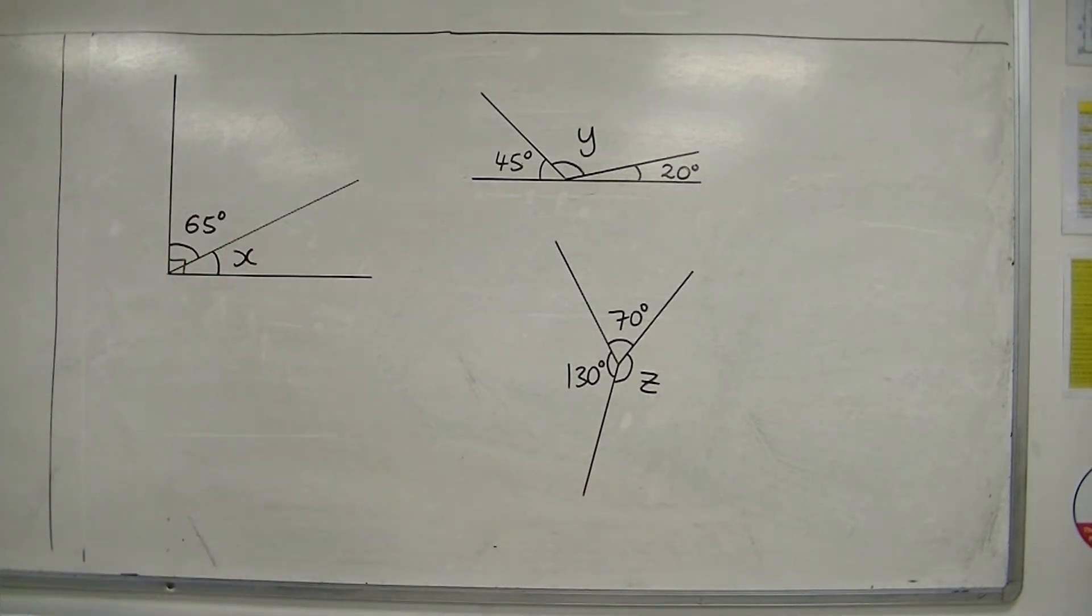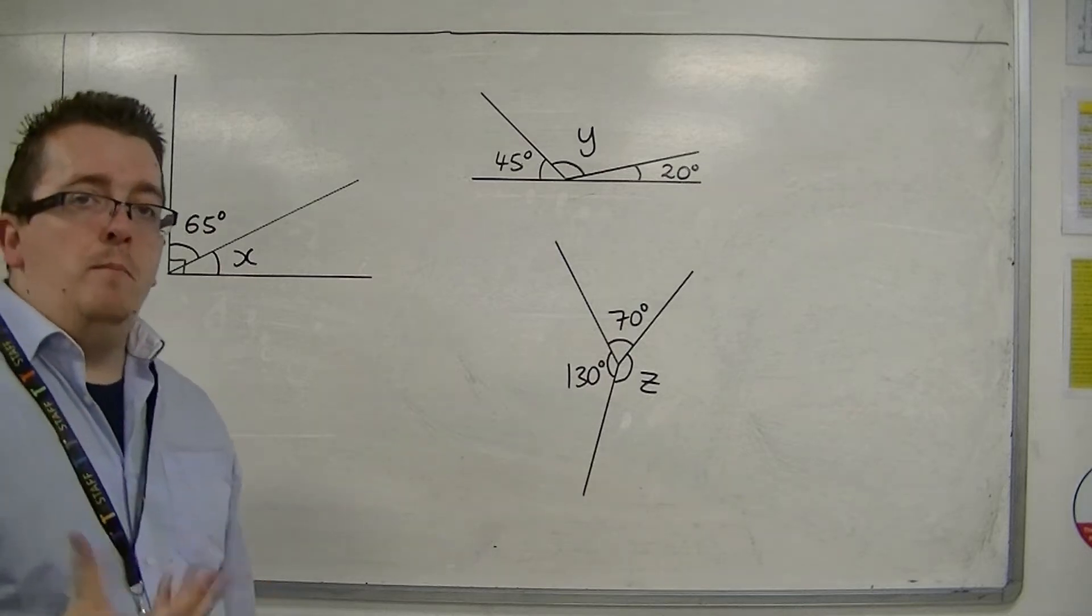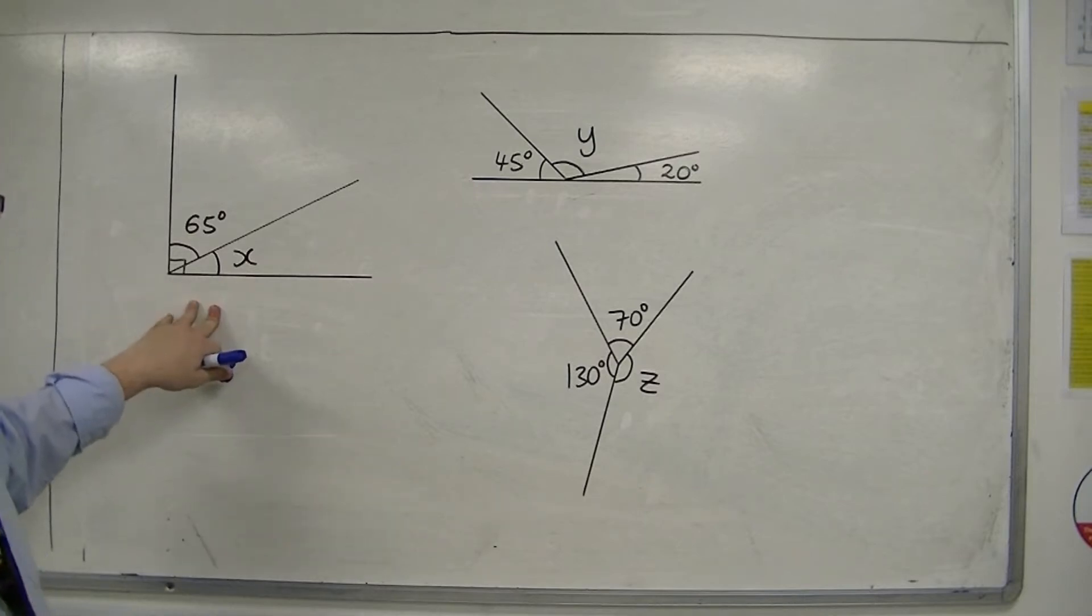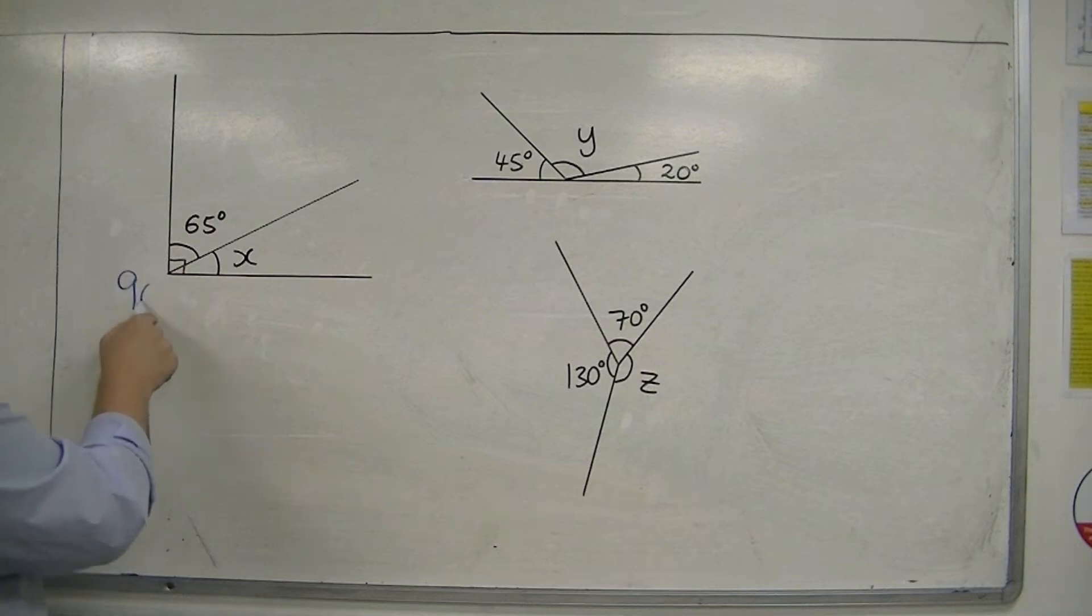For each of these, you need to know what the sum would have to be. Now, we know from the first video in this set that these angles, because that is a right angle, must add up to 90 degrees.